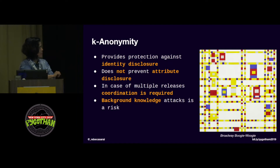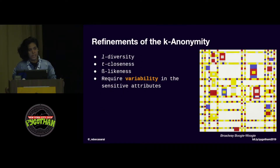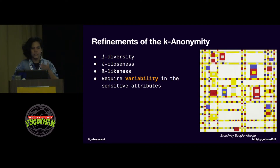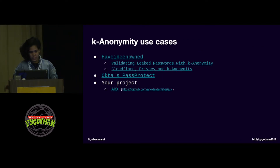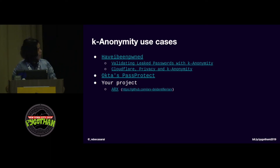Another thing about k-anonymity is that if you do multiple releases, you need to coordinate them to make sure you're not releasing one type of data in one dataset and other types in another. Background knowledge attacks are still a risk. That's why there are a few refinements to this technique — they all search for ways to change the variability of sensitive attributes to assure privacy. One use case is Have I Been Pwned, which uses k-anonymity to break your password into chunks and send them to the server so the server never knows your full password.